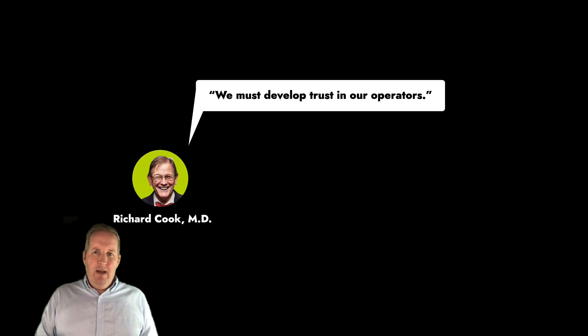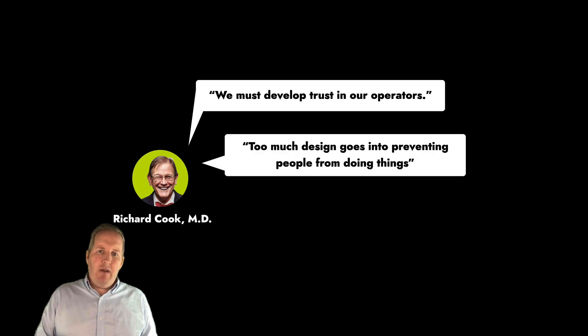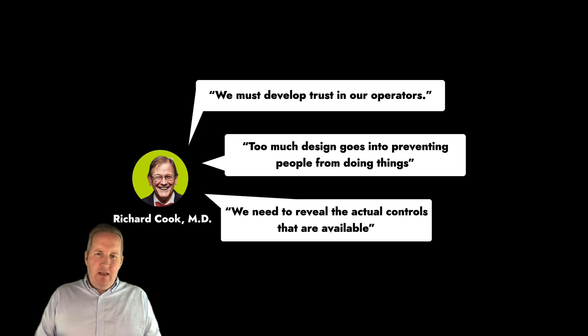Dr. Cook's main point is that we have to develop trust in our operators—that's how we get better outcomes. Too much of our design thinking goes into preventing people from doing things, locking people out, and providing more automation to manage our systems. That actually causes more problems. The path to safety is actually revealing the actual controls that are available, giving the operators better controls to both better understand the system—this idea of observability—and being able to actually turn the knobs, pull the levers, and manage the complex system we're faced with.